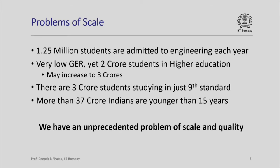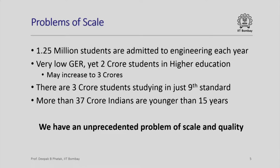Let us now look at some of the problems of scale that only India faces. There are 1.25 million students admitted to engineering every year. We have a very low gross enrollment ratio compared to developed countries where 50–60 percent of students passing out of schools join colleges. Our ratio was a dismal 11 percent; it has increased to 18 percent and we wish to increase it to 30 percent. Today we have about 2 crores students in higher education, which may increase to 3 crores when we enhance our gross enrollment ratio. 20 million are already studying in higher education and 30 million shall soon be studying.